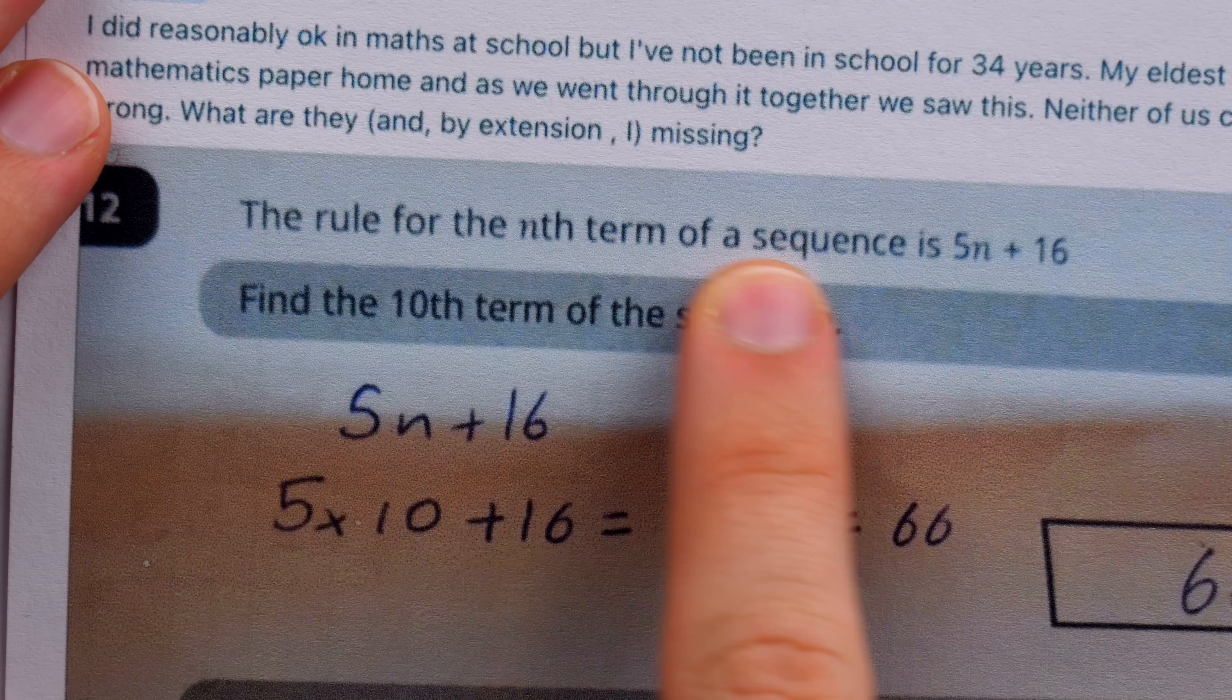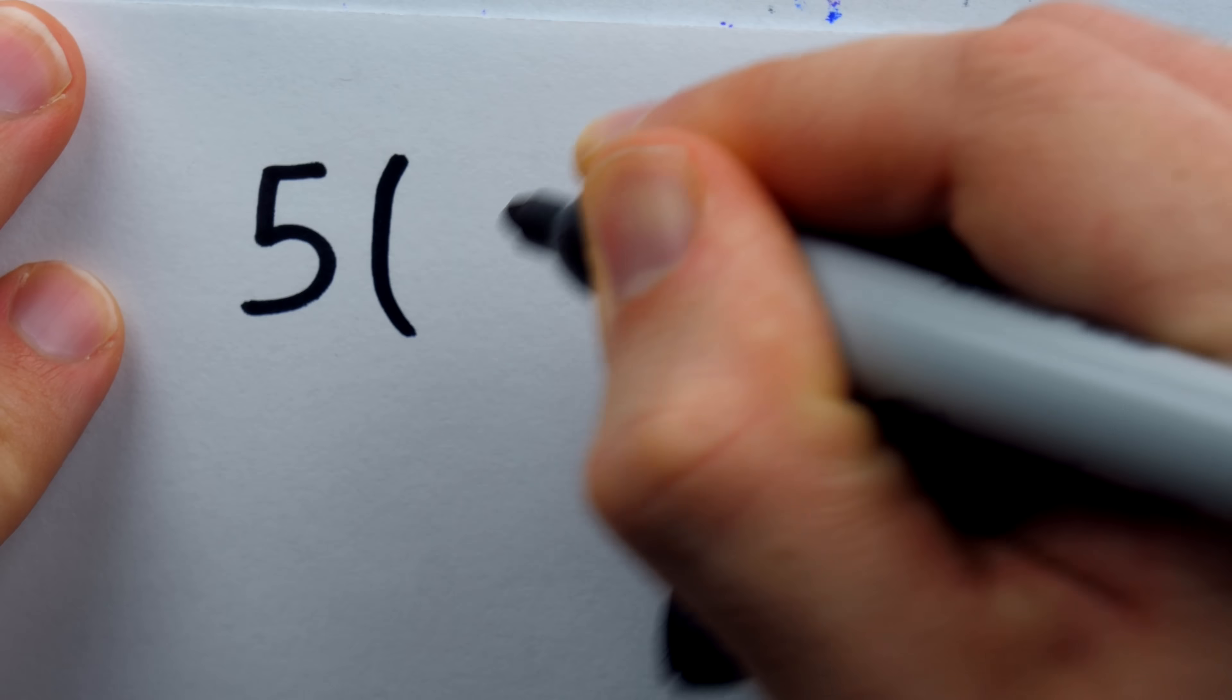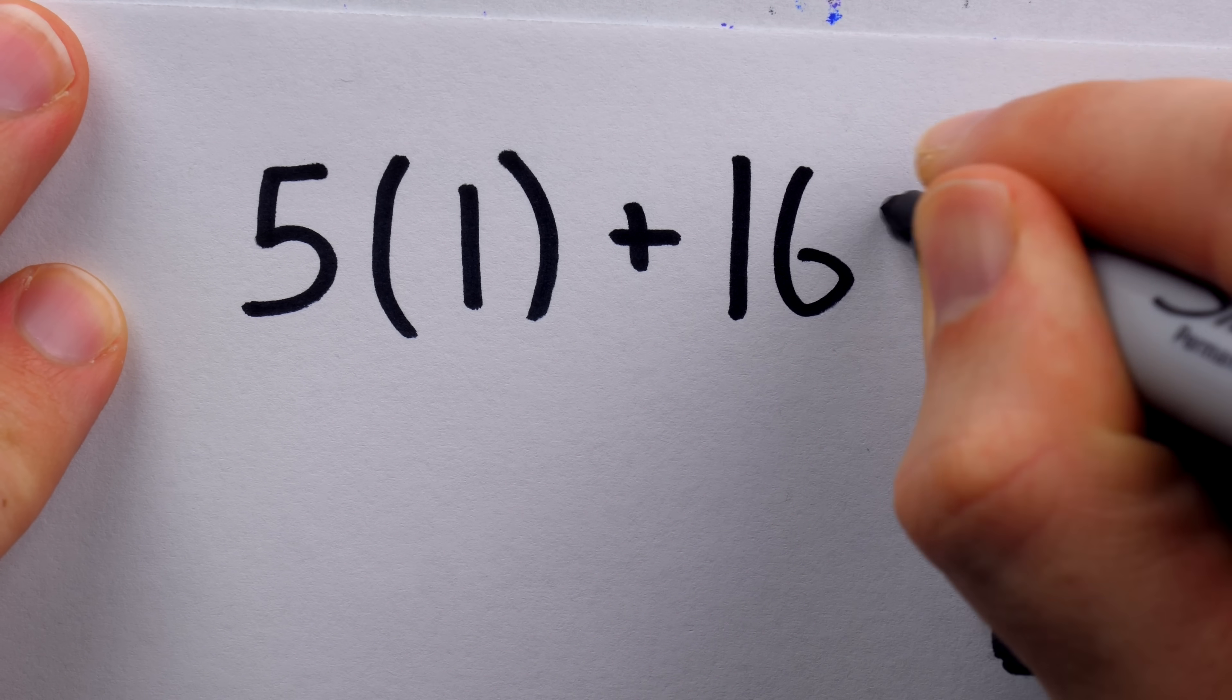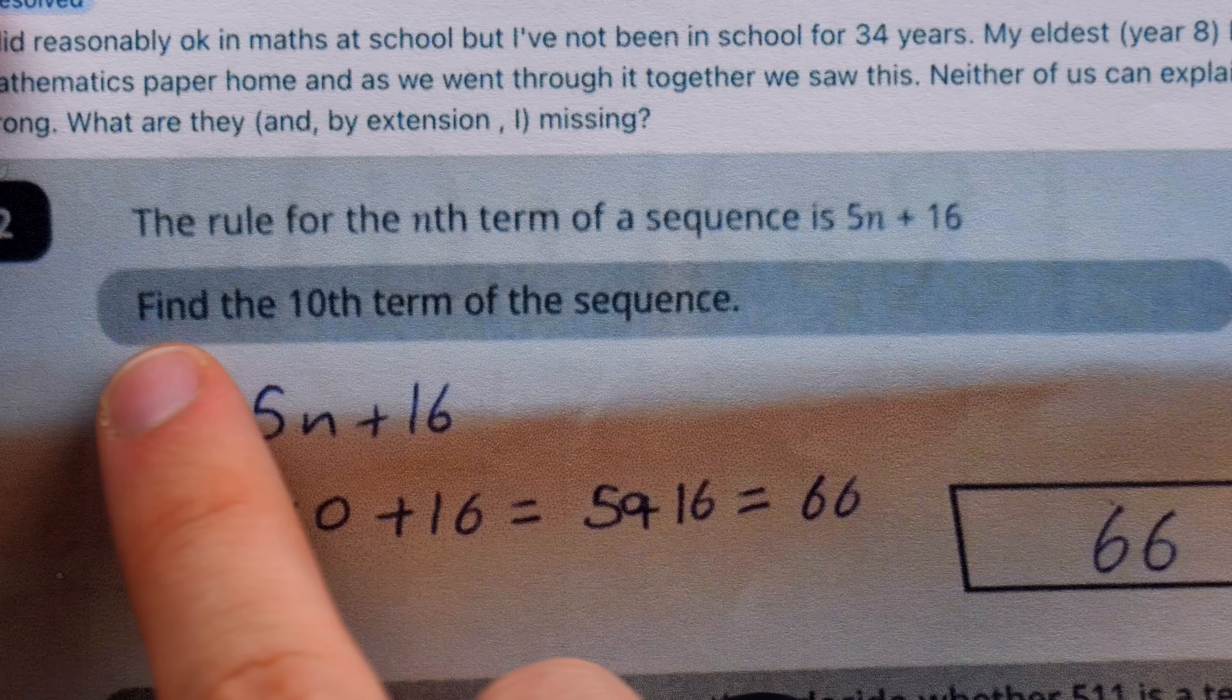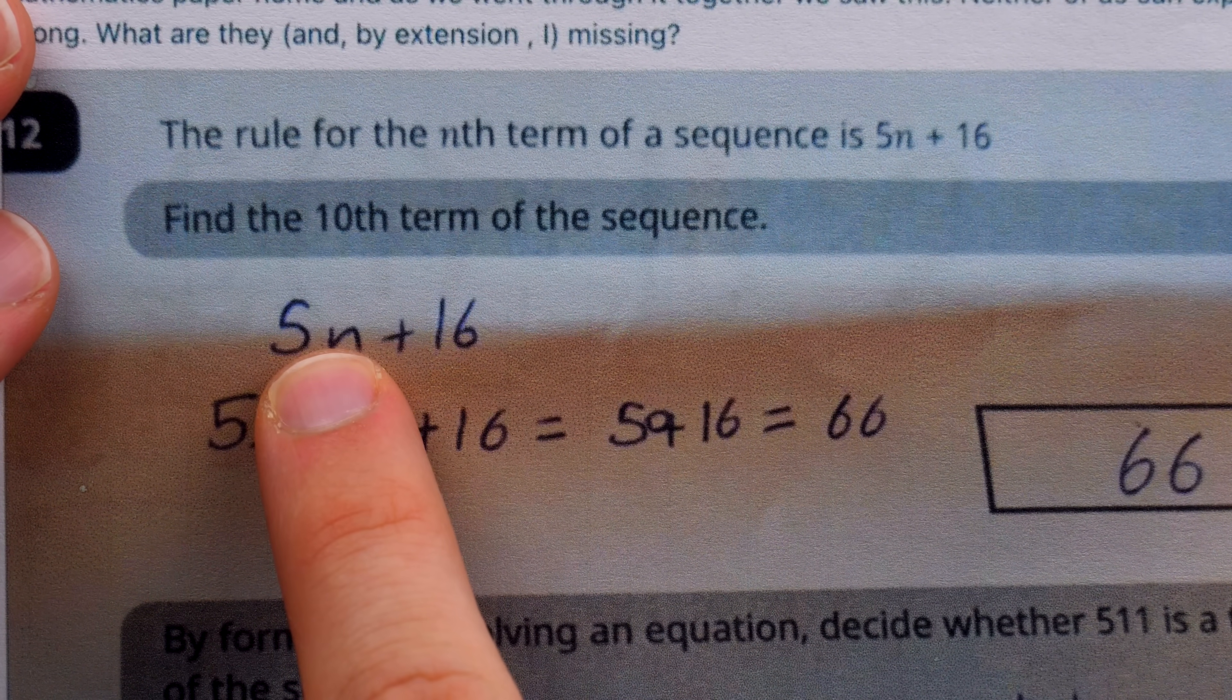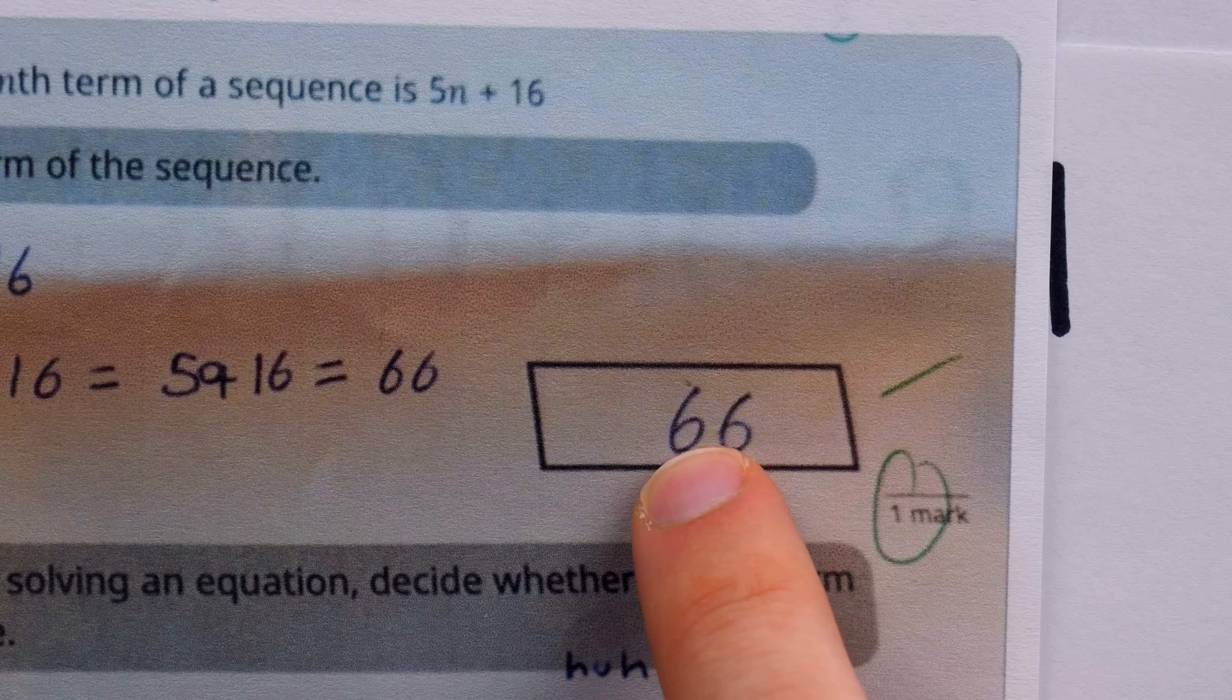The rule for the nth term of a sequence is 5n plus 16. This means we can find terms of the sequence by plugging positive integers into the given expression. For example, the first term can be found by plugging in n equals 1. 5 times 1 plus 16 is 21. So that's the first term of the sequence. Accordingly, we could also plug in 10 to solve this first problem, find the 10th term of the sequence. And we can see the student do that, plugging in 10 for n and doing the multiplication and adding 16. Had to sneak in that 0 next to the plus sign, but it works out. They got the correct answer and of course received credit.